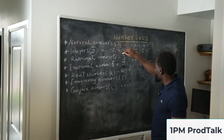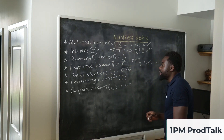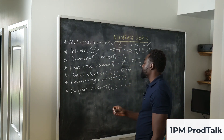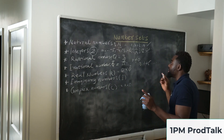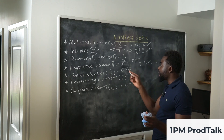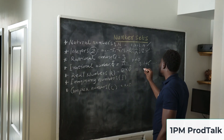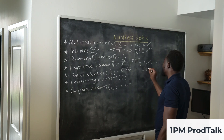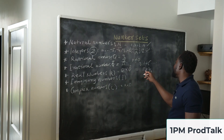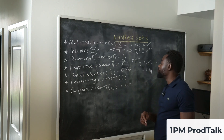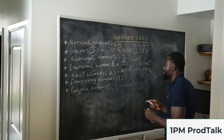The next thing is real numbers. The symbol is R, and real numbers are a combination of both rational and irrational numbers. An example would be pi plus 2 over 4 — that is a combination of both rational and irrational numbers.